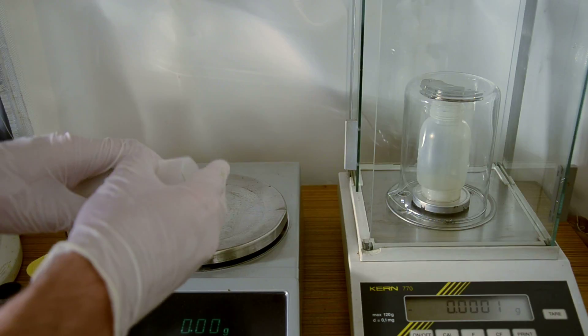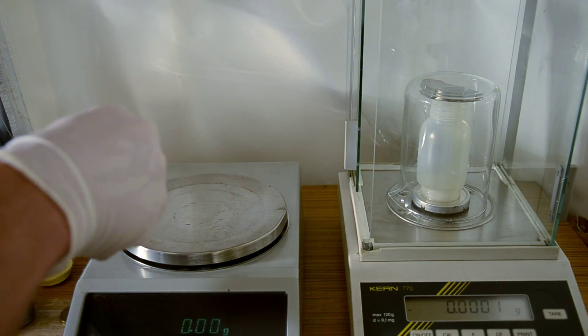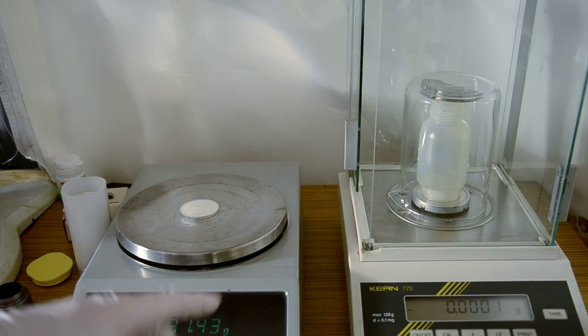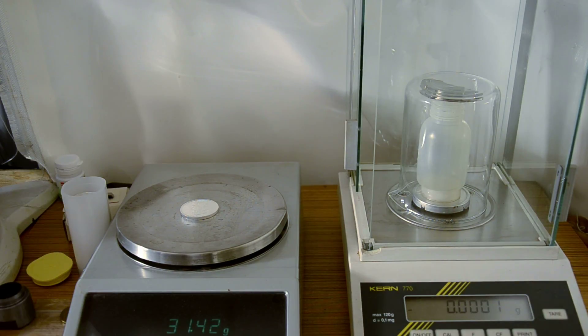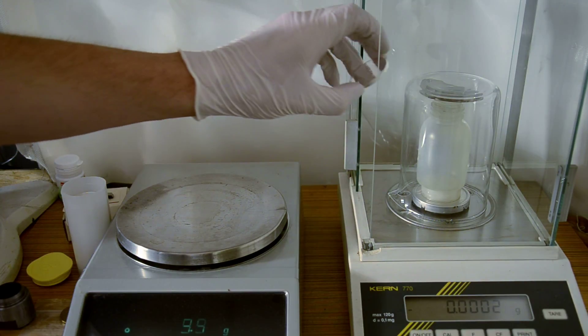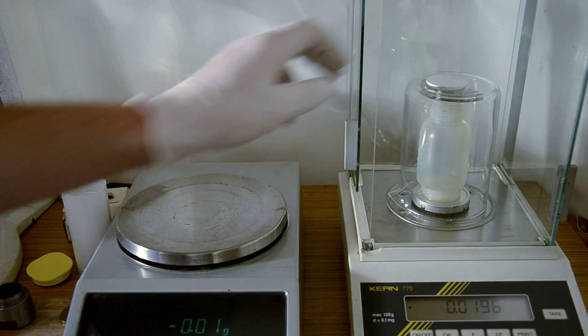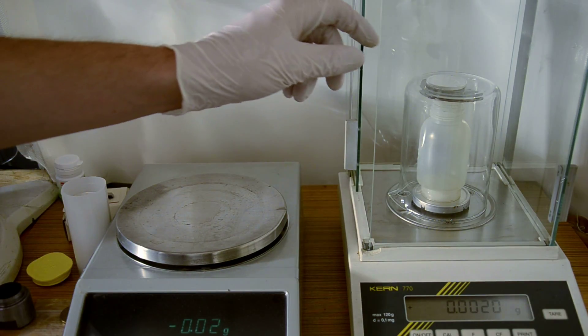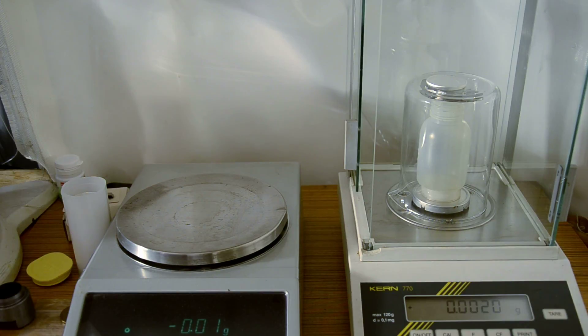So let's try it again with another coin. You see the weight is a little bit different because it's not that precisely made. But you can see it also shows a positive value, so it's also diamagnetic, but the value is different this time.